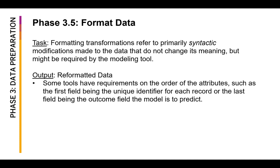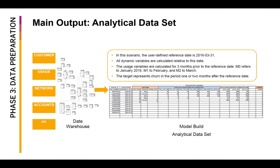Last phase is about formatting the data. Formatting transformations refer to primarily syntactic modifications made to the data that do not change its meaning. This may include rearranging of columns, renaming some of the nominal figures and so on. The general output of this phase is again what we call the analytical dataset.